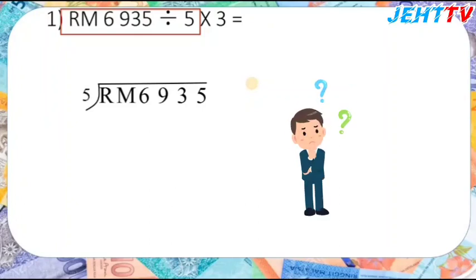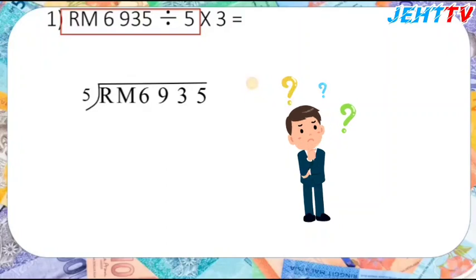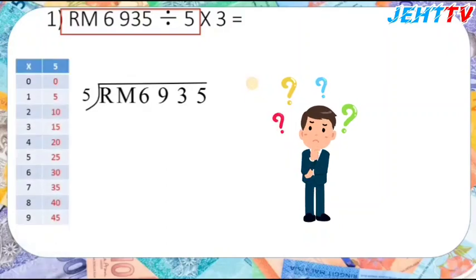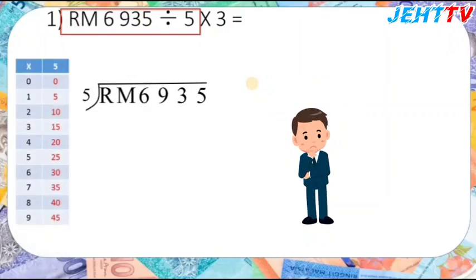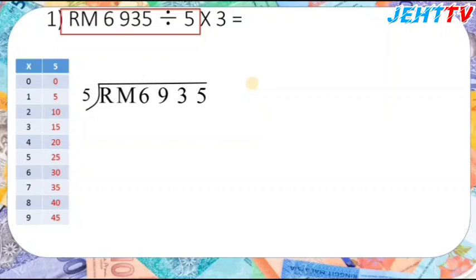Do you remember what we need to do for the division? We need to prepare the times table of 5. Then we can do the division. The first digit is 6, and 5 times 1 equals 5, so we write down 1.